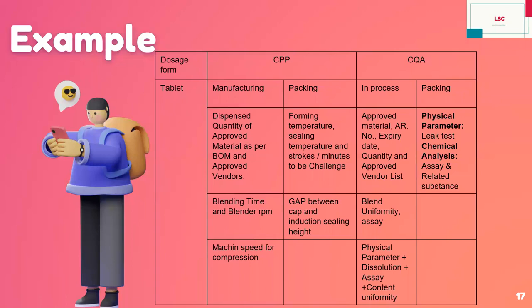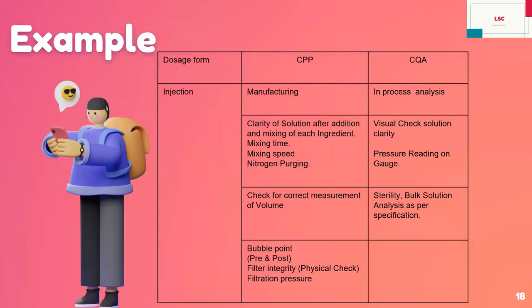One more example for injection: at the time of manufacturing — clarity of solution after addition and mixing of each ingredient, mixing time, mixing speed, nitrogen purging, correct measurement of volume. Bubble point, pre- and post-filter integrity, and filtration pressure. In-process: visual check of solution and pressure gauge reading — we have to monitor and record in our document. Sterility bulk solution analysis as per specification. These are examples of some CPPs and CQAs. We have to prepare our protocol and document with the rationale and risk assessment, and monitor all of these things in each and every batch.